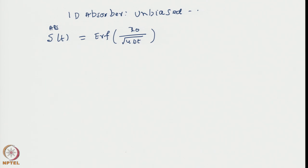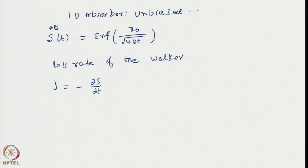S(t) tends to 0. We can now evaluate some other quantities of interest, for example the loss rate of the random walker. More precisely, it can be defined as the probability current of absorption. We call it J = −dS/dt, which is the probability current or absorption current.